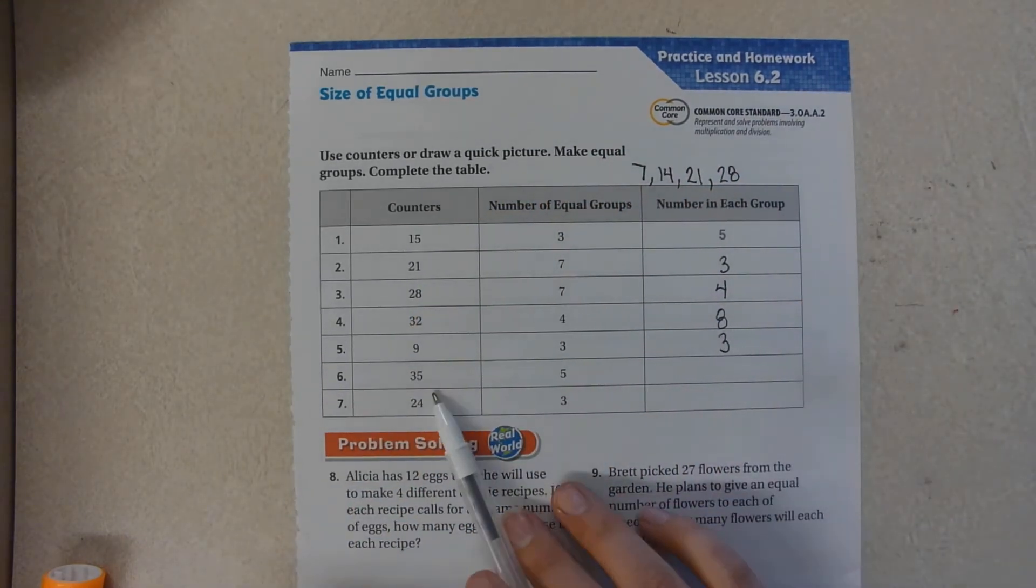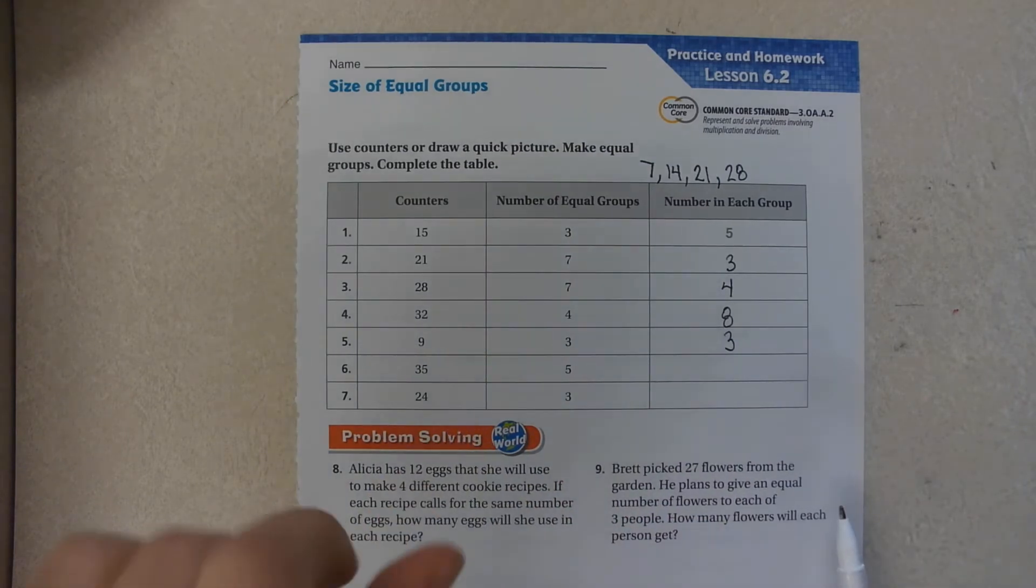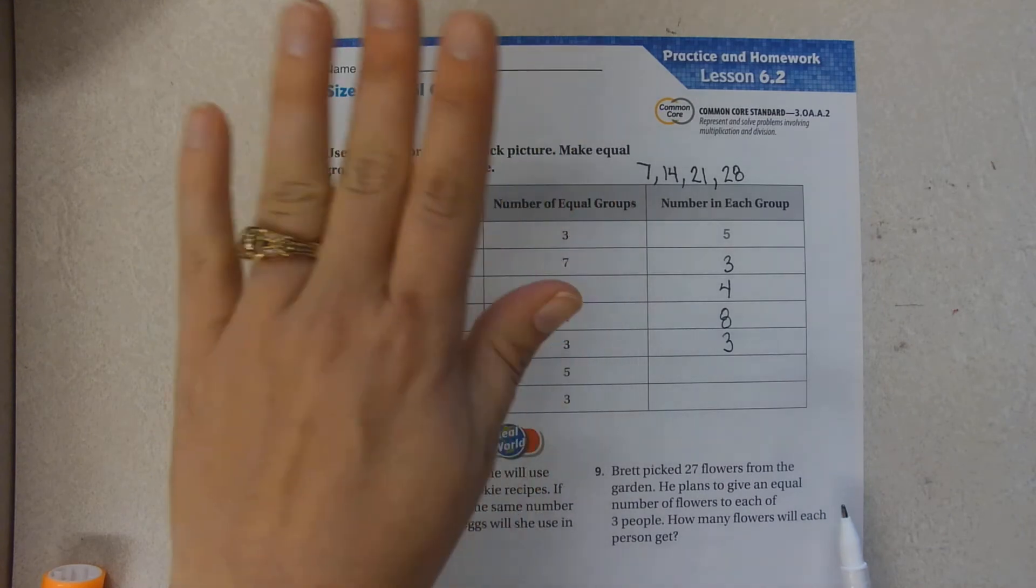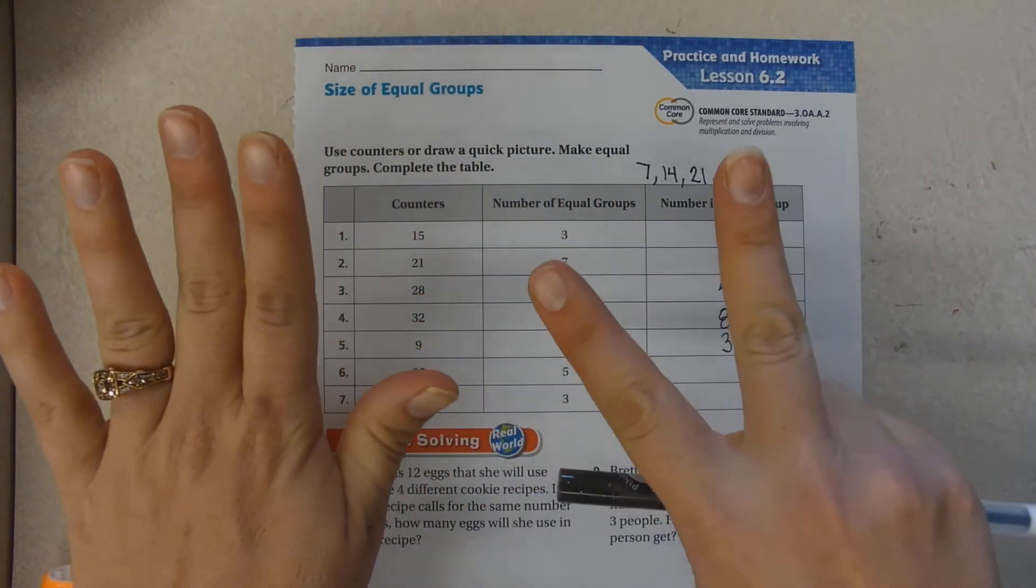How many times does 5 go into 35? 5, 10, 15, 20, 25, 30, 35.